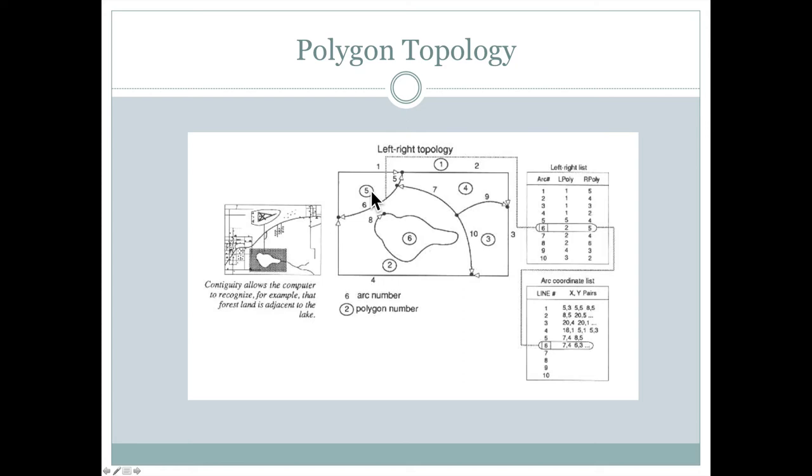For example, this line number six, going from this node here to this node here. If we can imagine if we were driving along the road here, what we would see is if we looked out the right-hand side, we would see polygon number five on our right-hand side. And if we looked out the left-hand side, we would see polygon number two on our left-hand side.